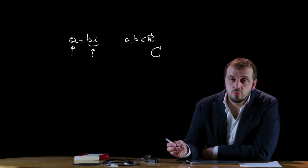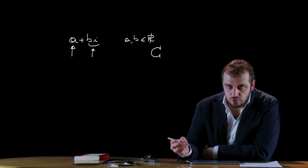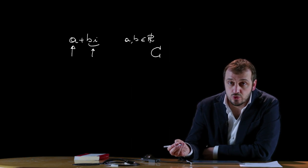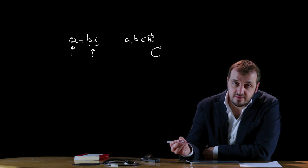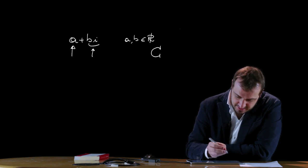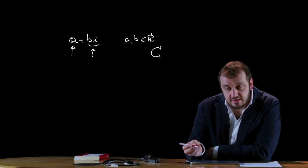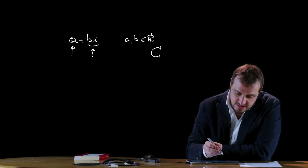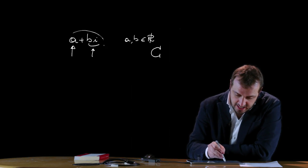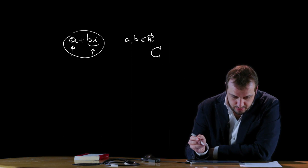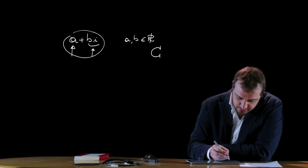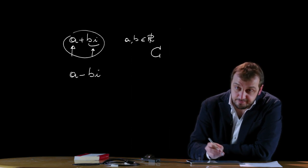Let's define conjugate complex numbers. Conjugate complex numbers are complex numbers characterized by the same real part but opposite imaginary parts. So the complex conjugate of A + Bi is simply A - Bi.